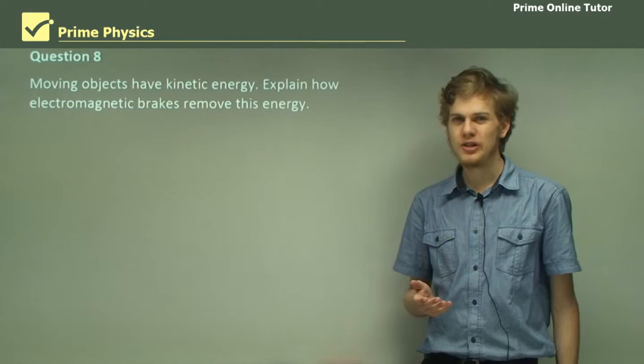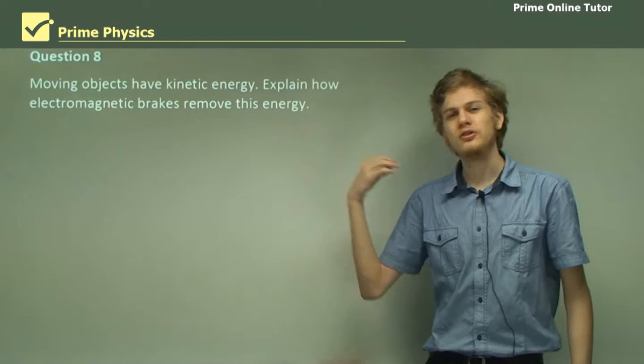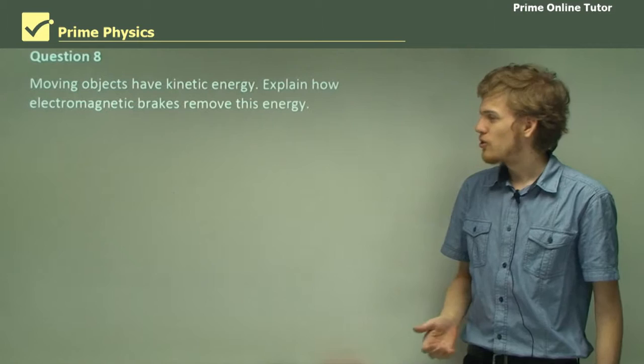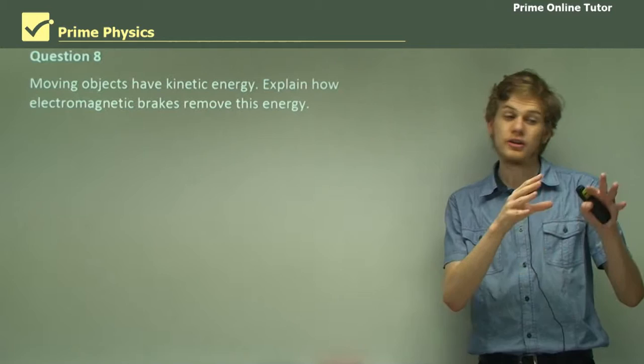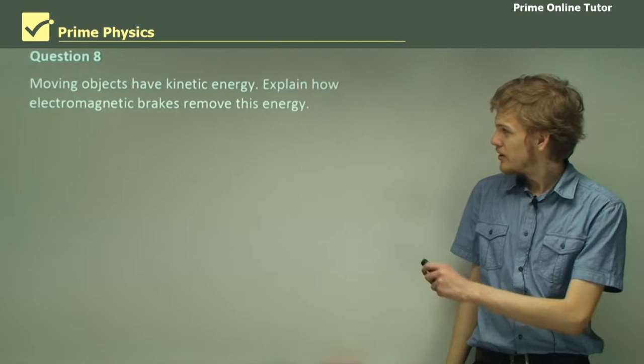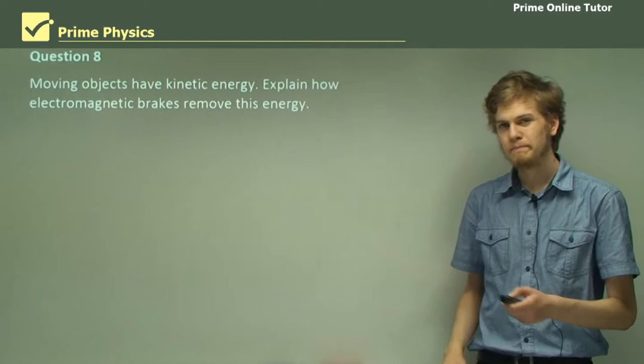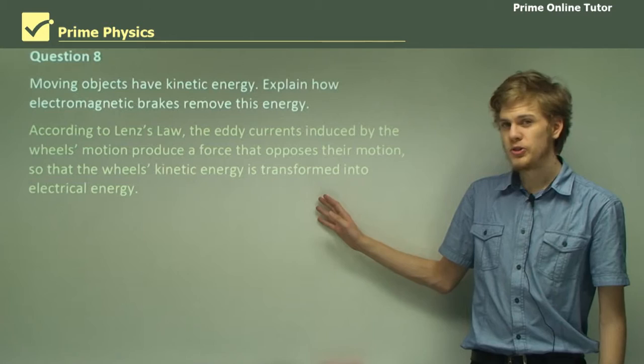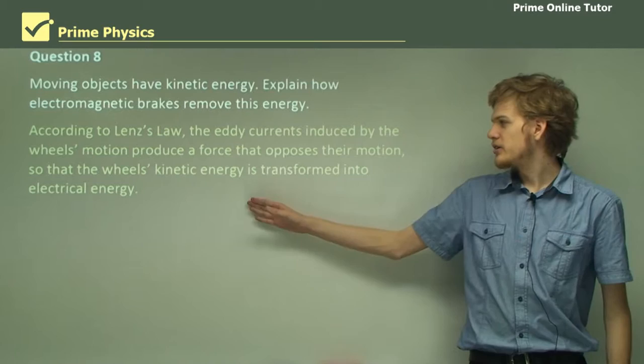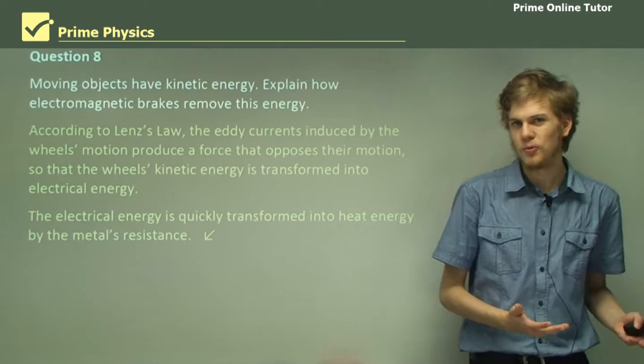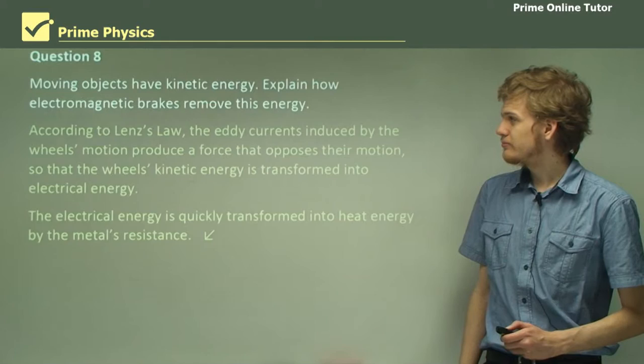Question 8: Moving objects have kinetic energy. Explain how electromagnetic brakes remove this energy. Due to conservation of energy, we can't destroy the energy — we have to convert it into a different form. Eddy currents are a way of turning kinetic energy into electrical energy. According to Lenz's law, the eddy currents induced by the wheel's motion produce a force that opposes that motion. This electrical energy quickly dissipates as heat, because all metals have resistance.